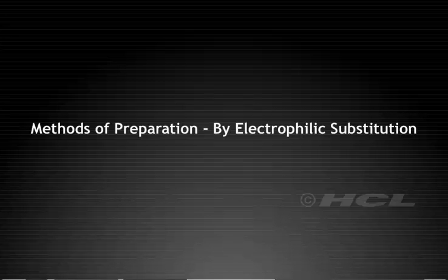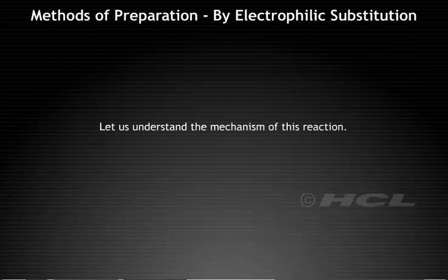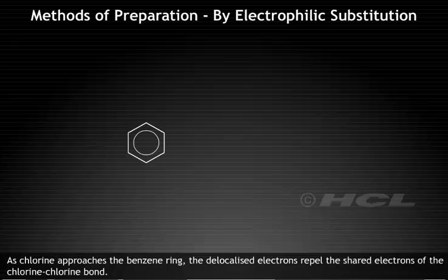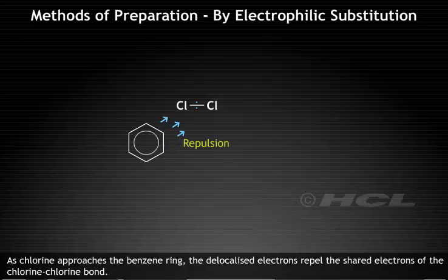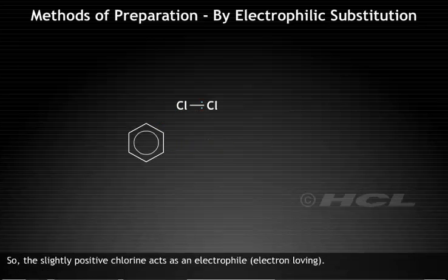Electrophilic Substitution. Let us understand the mechanism of this reaction. As the chlorine atom approaches the benzene ring, the delocalized electrons repel the shared electrons of the chlorine-chlorine bond. So, the slightly positive chlorine acts as an electrophile, electron loving.